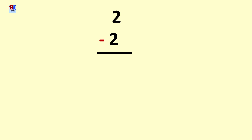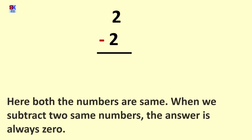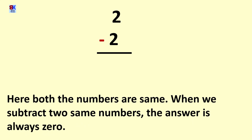Next is 2 minus 2. This should be easy for you. Here both the numbers are the same. When we subtract two same numbers, the answer is always 0. This was very easy, isn't it?